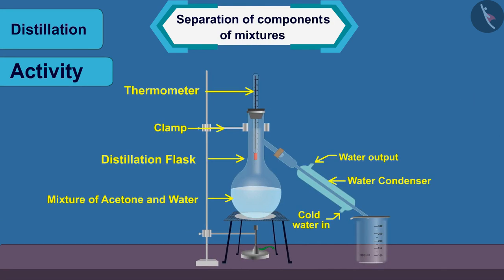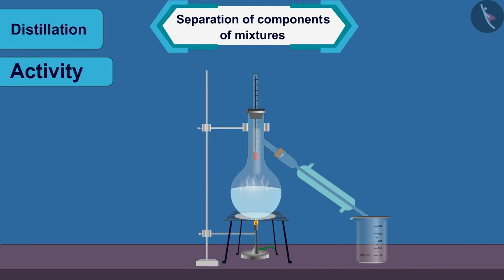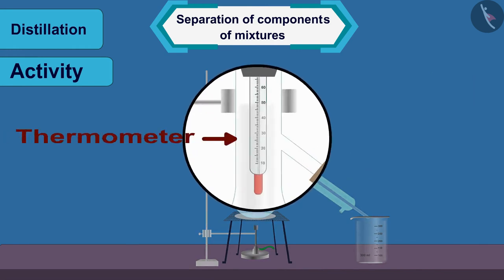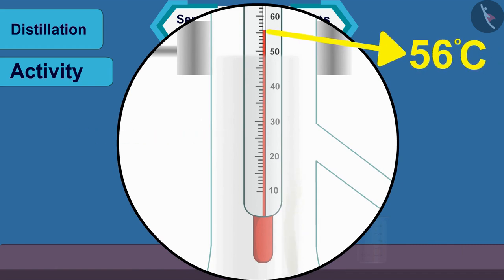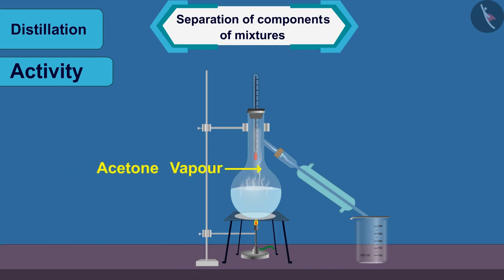Heat the mixture slowly and carefully observe the thermometer. As the mixture heats up, what do you observe? Vapour distillation of acetone appears to rise in the flask at approximately 56 degrees Celsius.